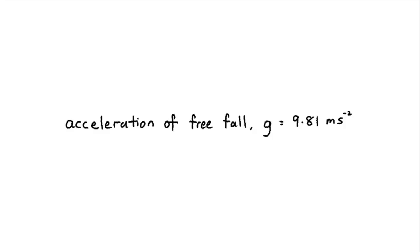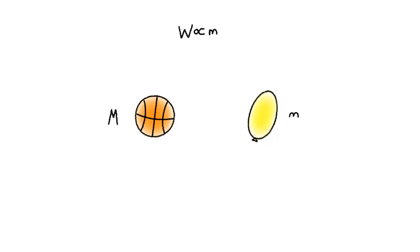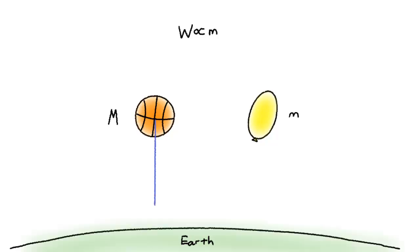It still makes no sense. Why? Because the basketball is heavier than the balloon, so the force is larger. You're right — the gravitational pull on an object is proportional to the mass of the object. The larger the mass, the harder the earth pulls it.